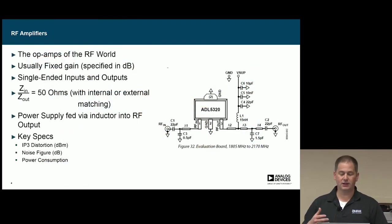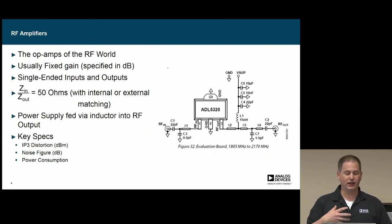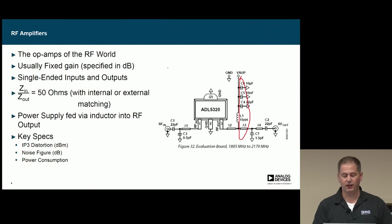Most of the time, the RF amplifiers are kind of the op amps of the RF world. I'm assuming most people have some background in undergrad electrical engineering where they took circuits one, circuits two class. Usually RF amplifiers have fixed gain, usually specified in dB at 50 ohms. Typically they're powered from the output side right here. So this is actually where the power comes in and provides power to the output. It doesn't actually have a separate power like an op amp would. Some key specifications we'll be talking about are IP3, noise figure, and power consumption.